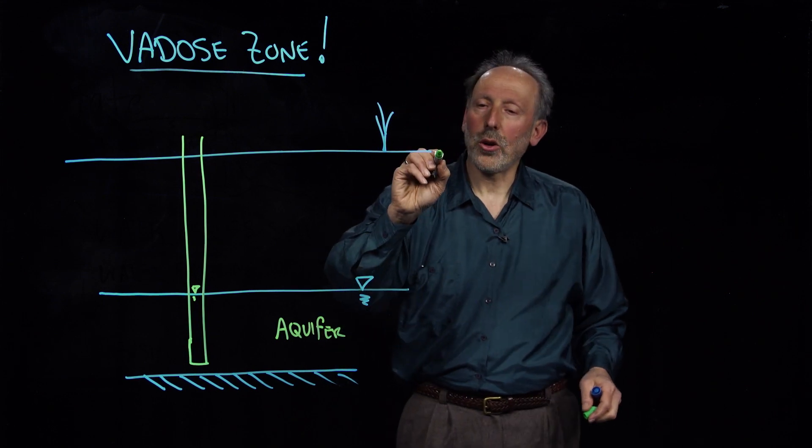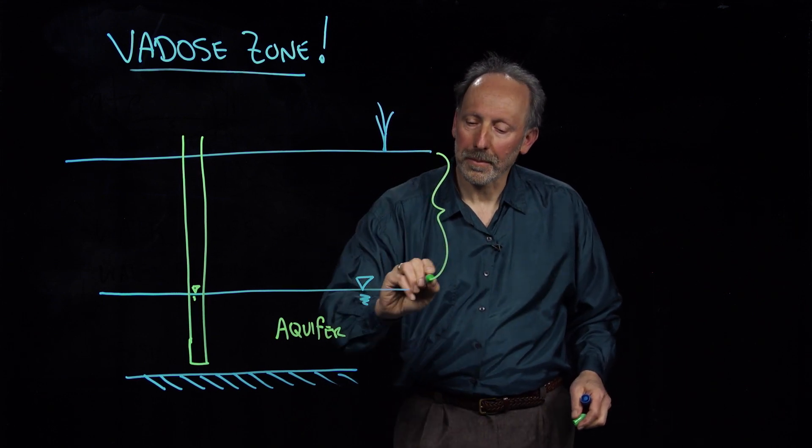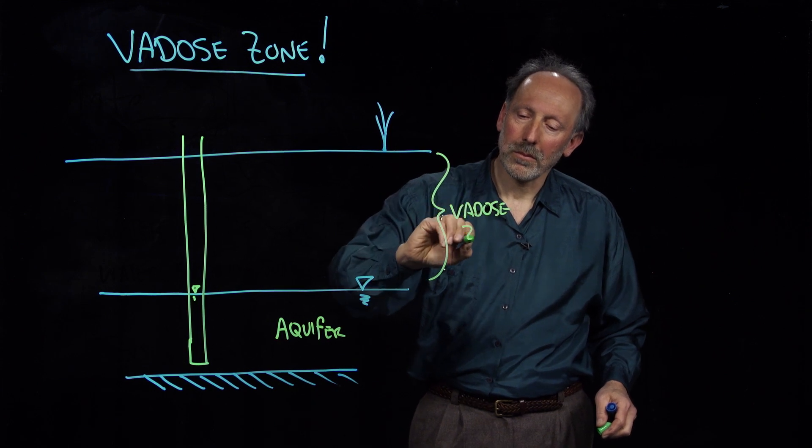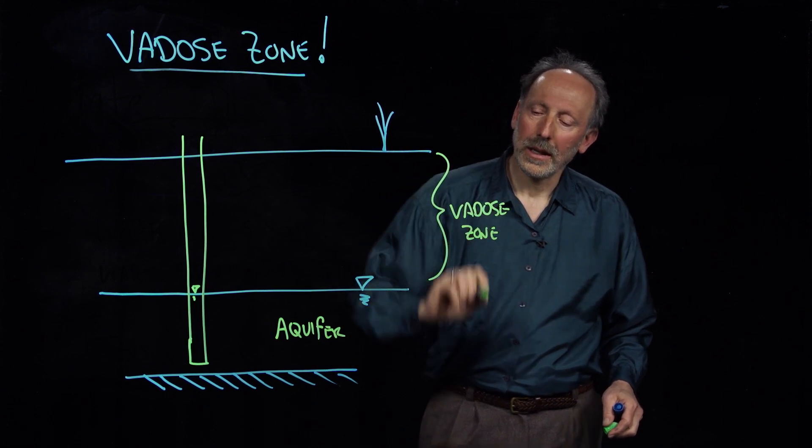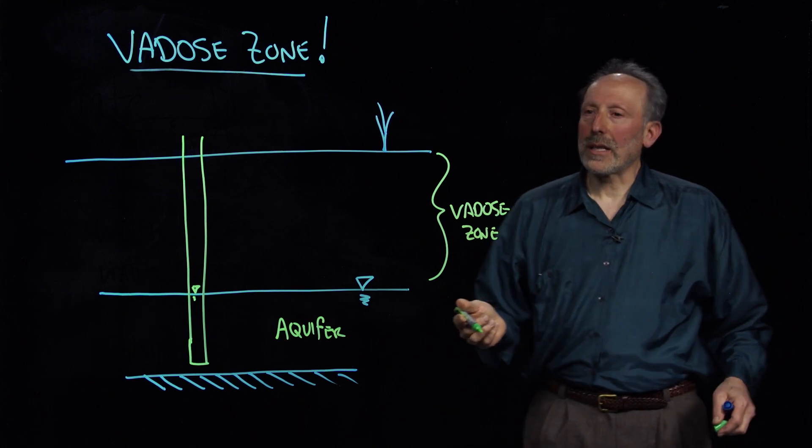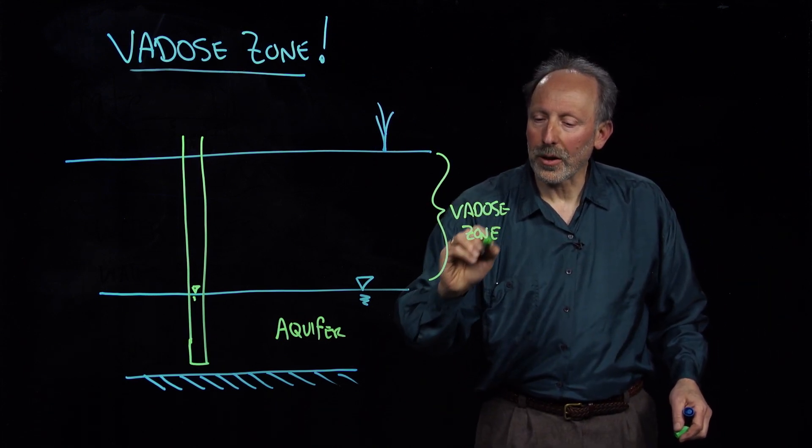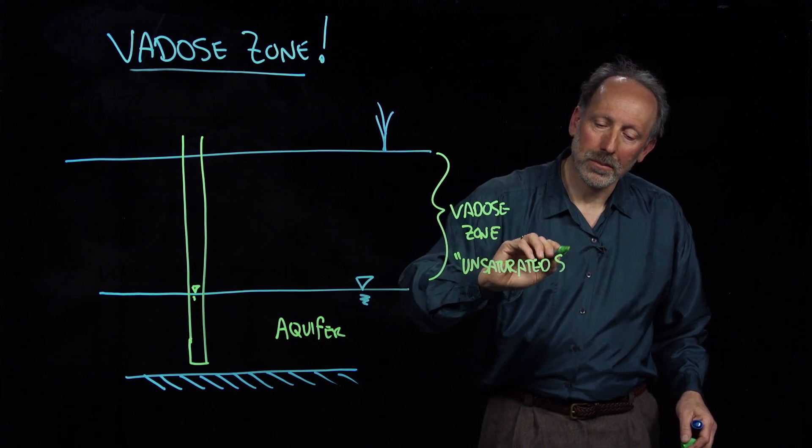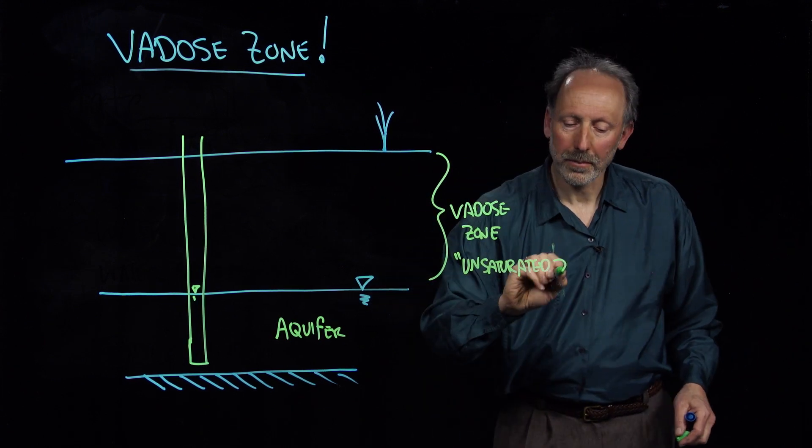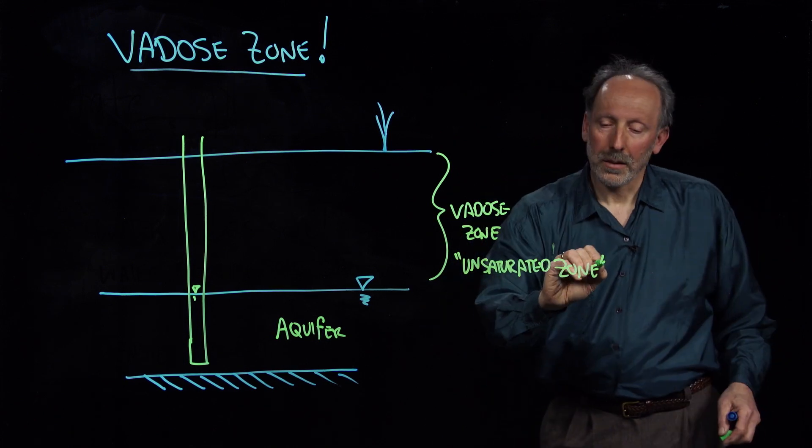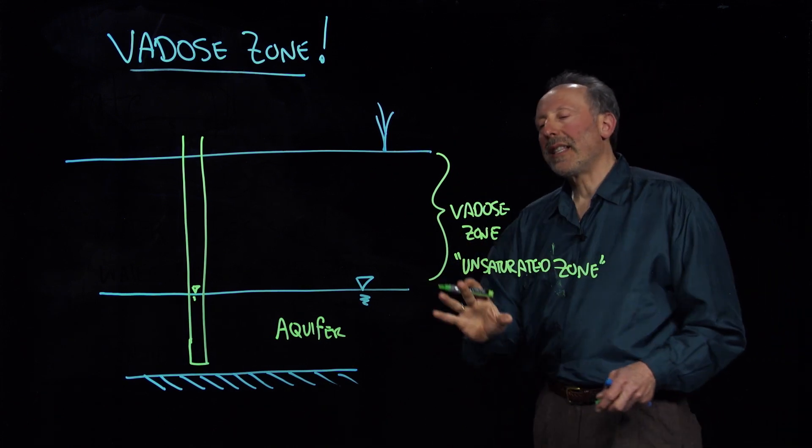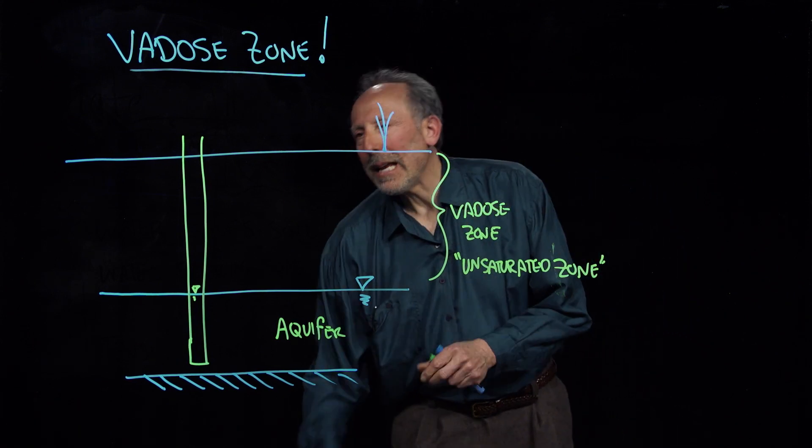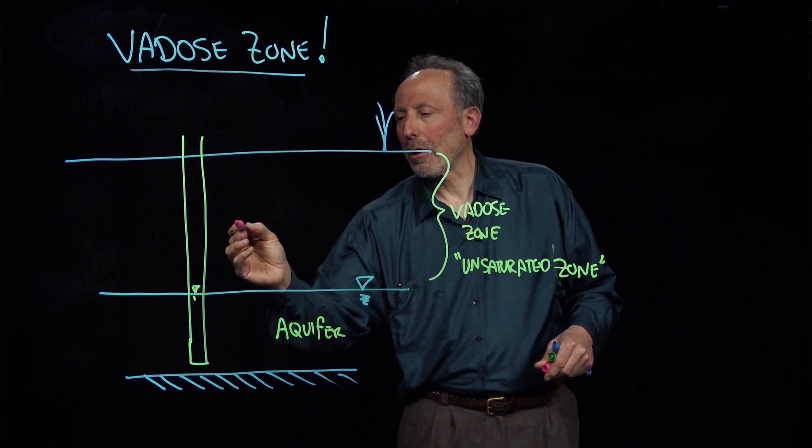And we'll generally call this whole region the Vadose Zone. Otherwise some people will refer to this also as the unsaturated zone. So it is the area above the top of the aquifer. Keep in mind that there may be what we call perched aquifers.